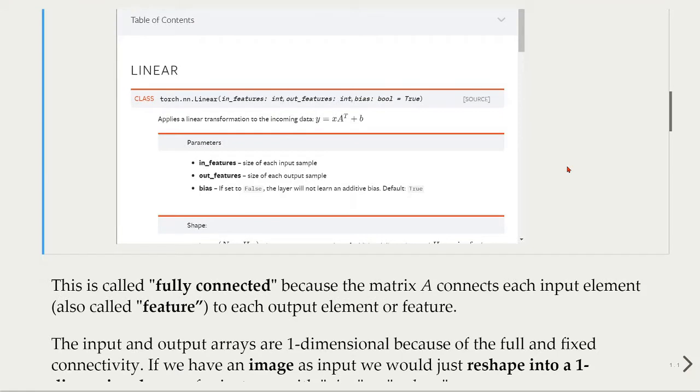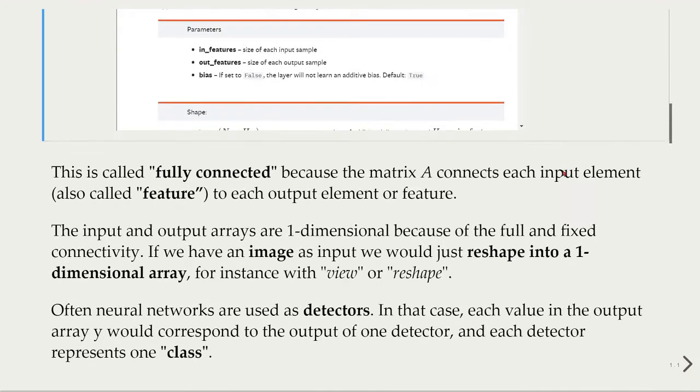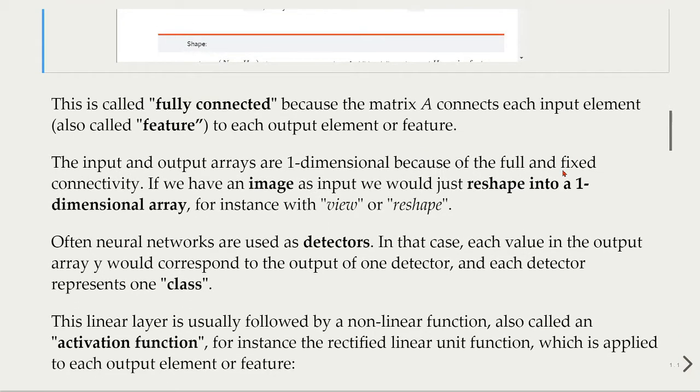This is called fully connected because the matrix A connects each input element, also called feature, to each output element or feature. The input and output arrays are one-dimensional because of the full and fixed connectivity. If we have an image as input, we will just have to reshape into a one-dimensional array, for instance using view or reshape in PyTorch.